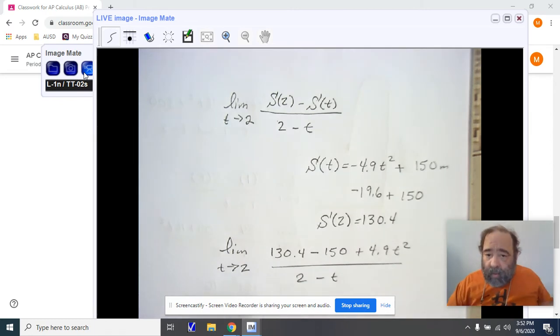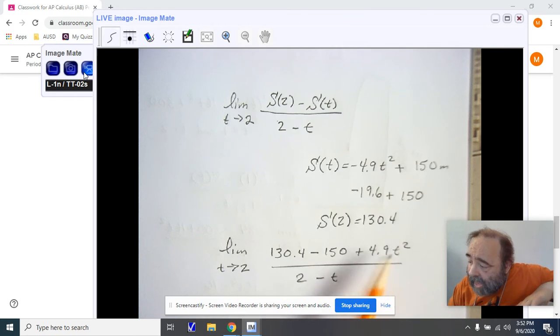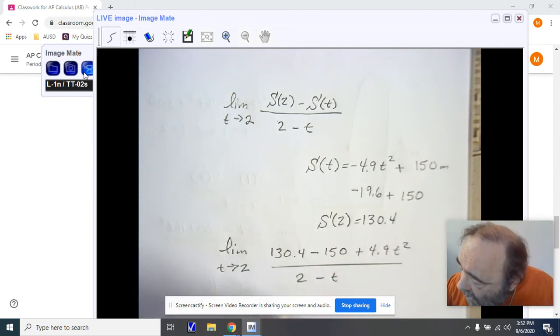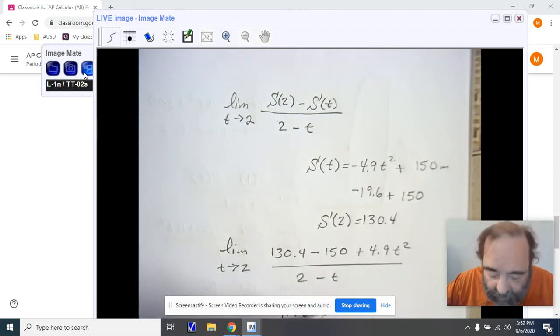The limit as t approaches 2 for 130.4 minus 150 plus 4.9t squared all over 2 minus t. Notice that when I multiplied through by my negative for s(t), I moved the 4.9 to the back, and I moved the 150 up to the front, and made sure it was negative. We're now going to add these two pieces together. So, I'm going to subtract 150. And you'll notice that I end up having the 4.9 moving back into the front, and I have minus 19.6.